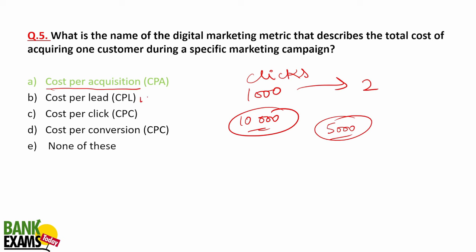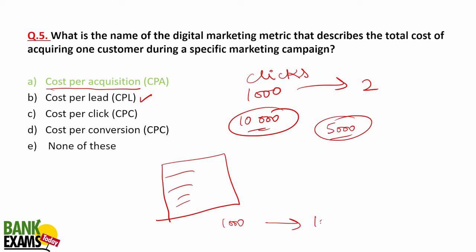Cost per lead: a lead is when someone fills a form. If I paid for 1,000 clicks and only 100 people filled the form, I calculate cost per lead accordingly. Cost per click is the amount paid per click on Google — when someone clicks an ad, that click costs the advertiser money.